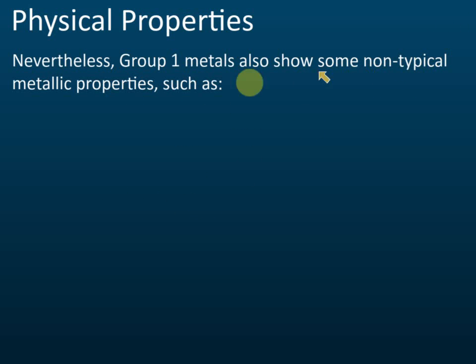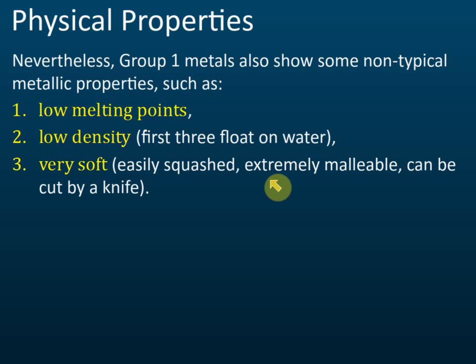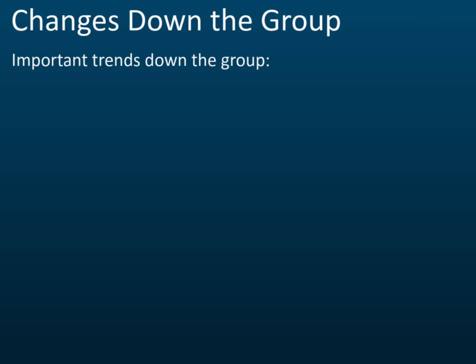However, group one metals also show some non-typical metallic properties. They have low melting point, whereas typical metals have high melting point. They also have low density — the first three have density lower than water, so they float on the water's surface. They are also very soft and can be cut easily with a knife, unlike other metals which are very hard.